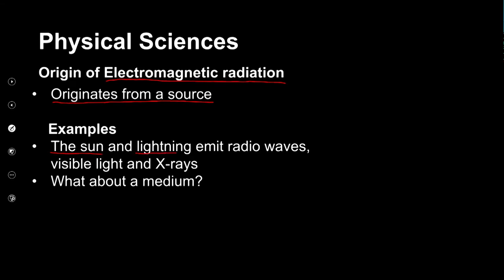What about an example closer to home? A common source of a wide range of electromagnetic radiation is lightning. We usually associate lightning with a bright flash in the sky followed by a thunderclap — that light we see is the visible part of the electromagnetic spectrum that lightning is actually producing. But with the right equipment you would be able to see that lightning also produces radio waves and even the slightly more energetic and dangerous x-rays. In both of our examples we haven't made any mention of a medium.